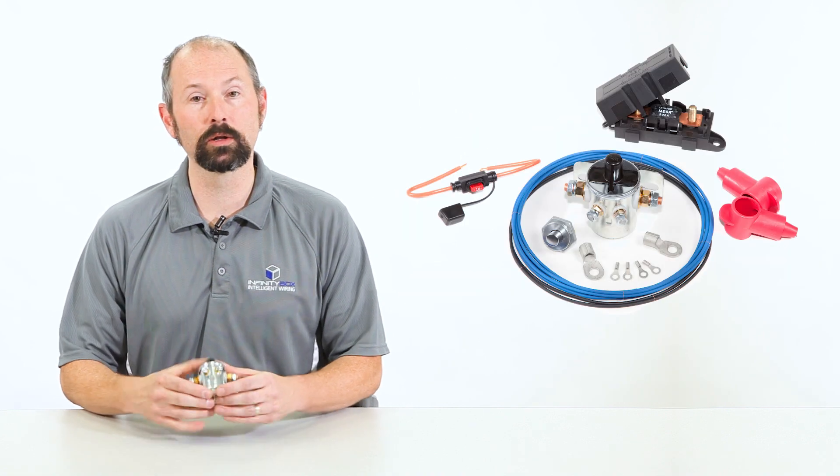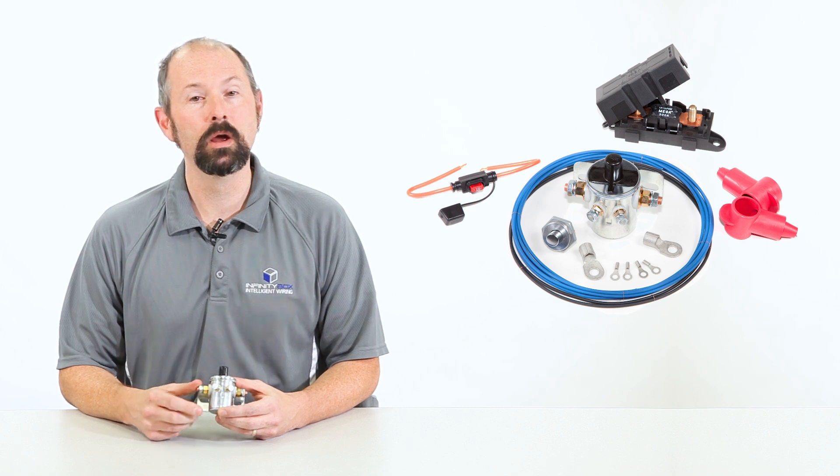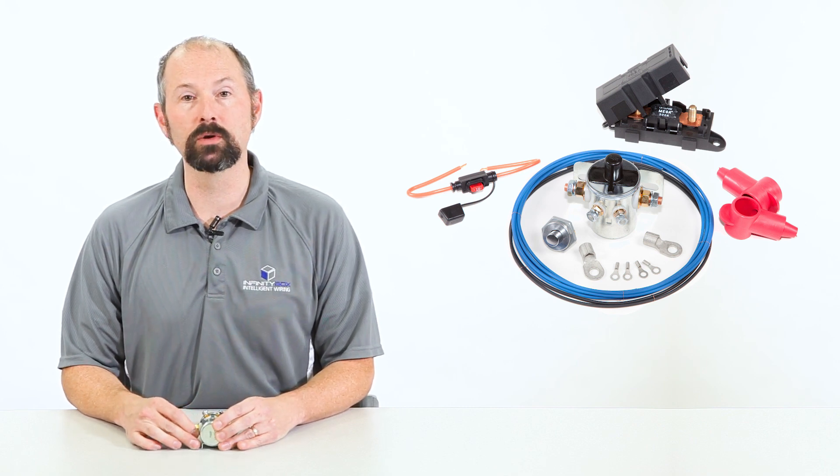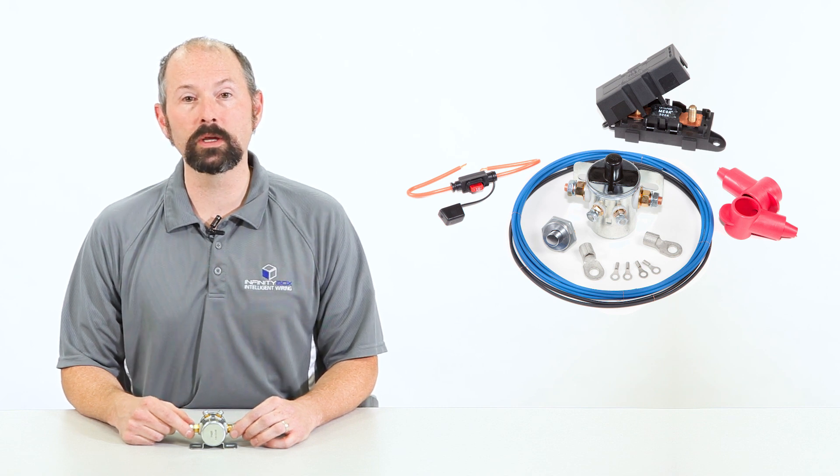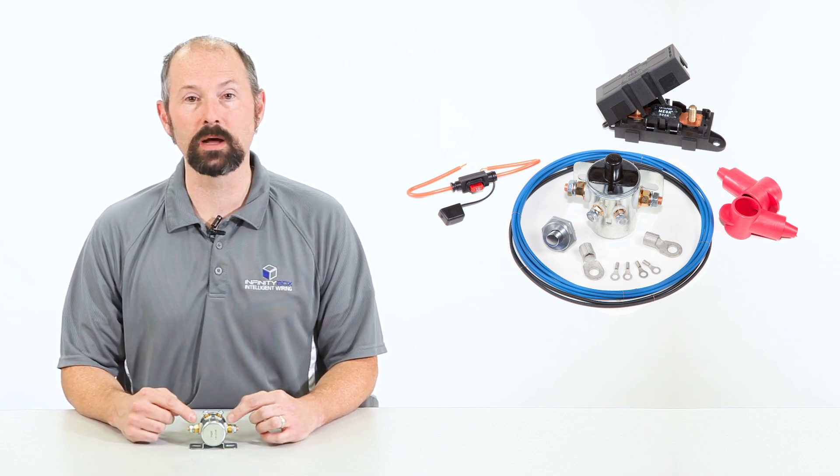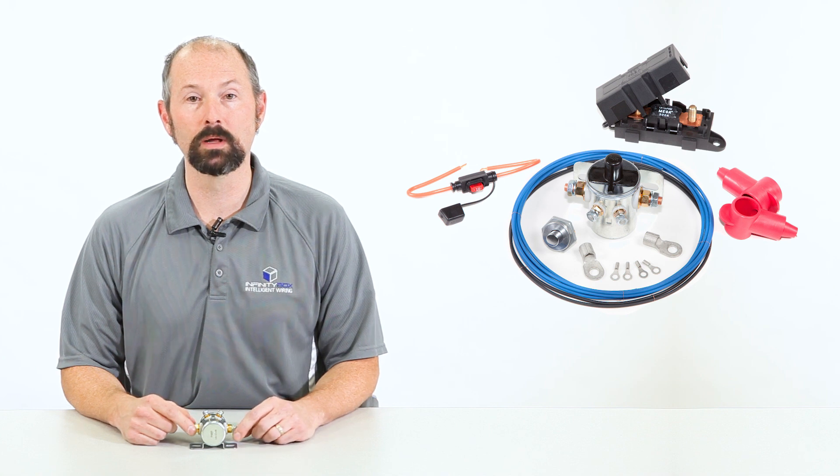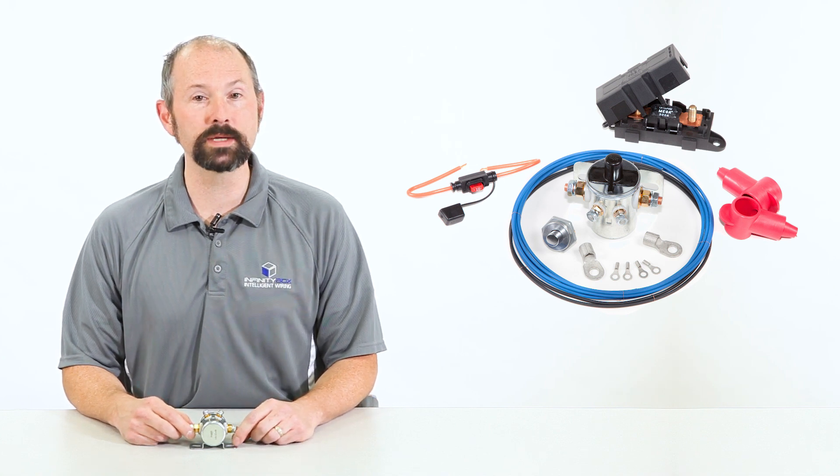In the in-reserve kit, we include the in-reserve solenoid. We also include a primary fuse to go between your battery and the solenoid. It also includes all the wiring that you would need to connect the in-reserve solenoid to the power cell. It also includes a reset button.